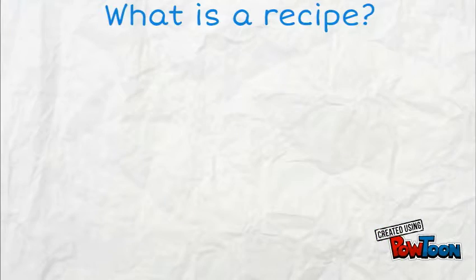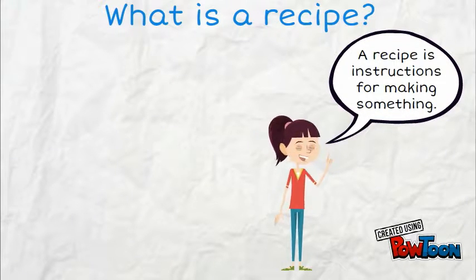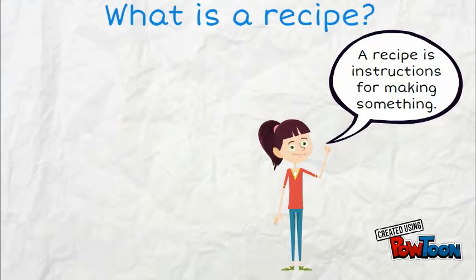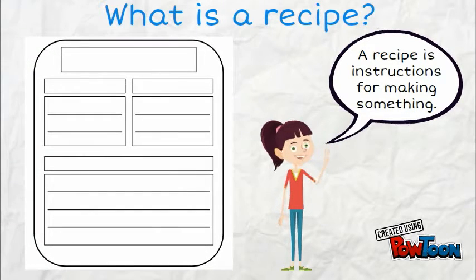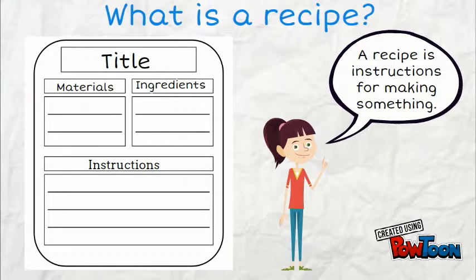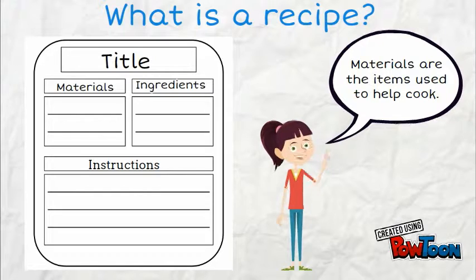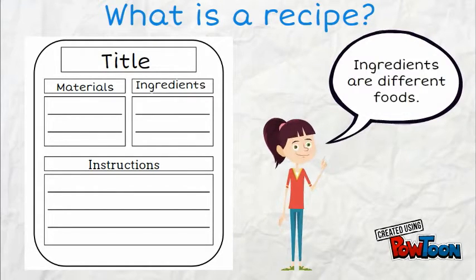What is a recipe? A recipe is instructions for making something. A recipe has a title, materials, ingredients, and instructions. Materials are the items used to help cook. Ingredients are different foods.